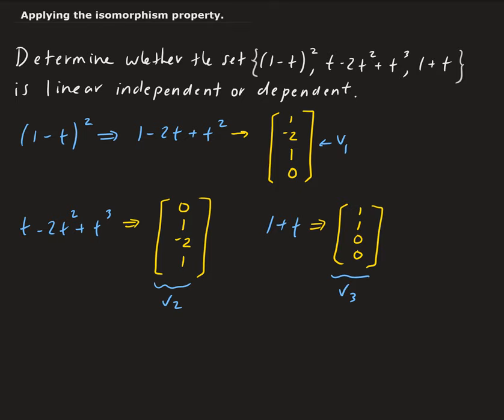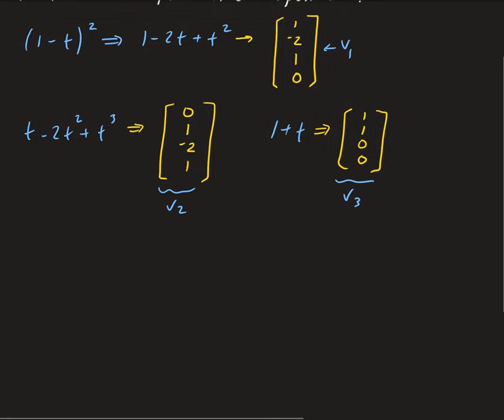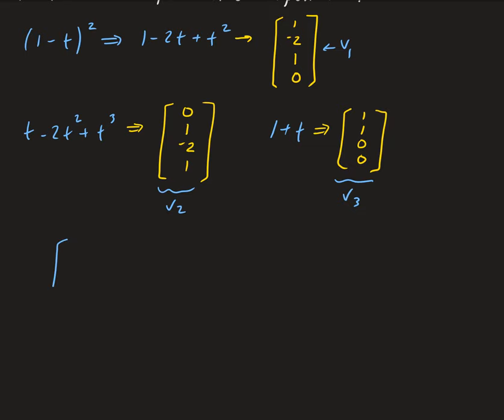So we're going to put these into a matrix. So this will be v1, v2, v3. So we have 1, negative 2, 1, 0, 0, 1, negative 2, 1, and 1, 1, 0, 0.